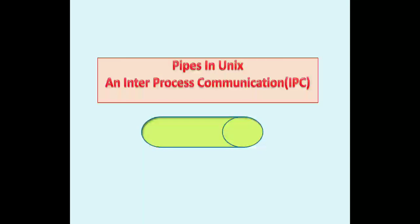In this session we will see pipes in Unix, which is an inter-process communication mechanism. Inter-process communication is a very generic term which describes how two processes may exchange information with each other. Pipe is an IPC mechanism that allows two or more processes to send information to each other. Let us see some of the pipe features.